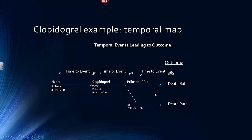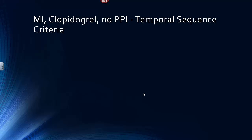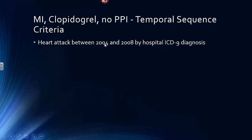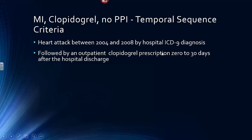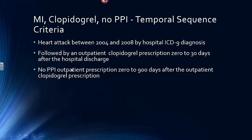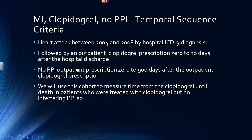We want to find out what is the relative rate of death in the two populations. For the cohort where there's a heart attack, clopidogrel, and no PPI, here are the temporal sequence criteria: the heart attack occurred between 2004 and 2008 using ICD-9 diagnoses in the hospital electronic medical record system, followed by an outpatient clopidogrel prescription 0 to 30 days after hospital discharge, and no PPI outpatient prescription 0 to 900 days after the outpatient clopidogrel prescription. We will use this cohort to measure time from clopidogrel until death in patients treated with clopidogrel but no interfering PPI.